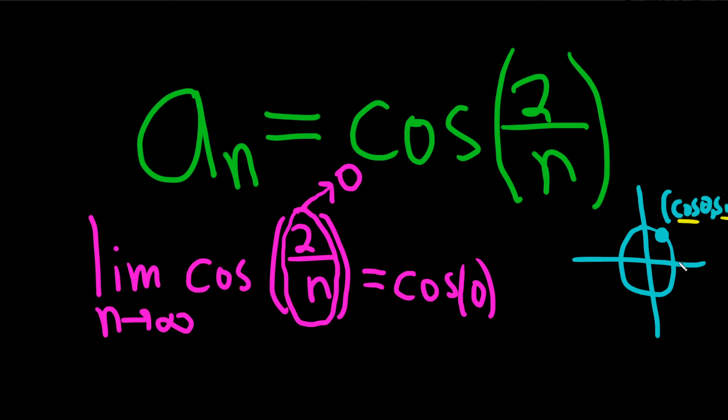Cosine theta comma sine theta. And so we want the cosine of 0, the angle 0. So here, this is 1 comma 0. So cosine is the x coordinate, so this is equal to 1.